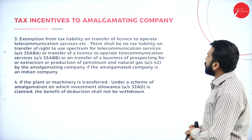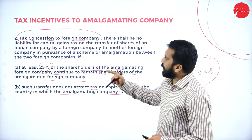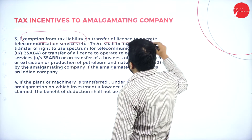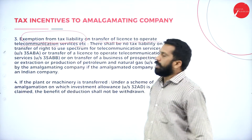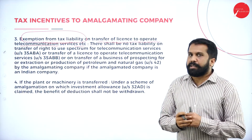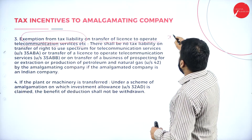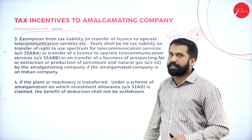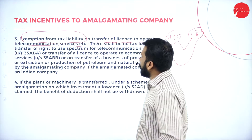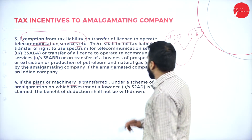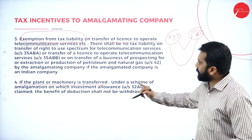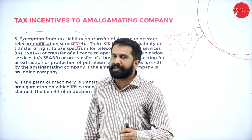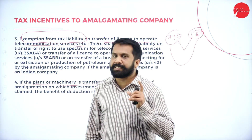Third tax incentive to the amalgamating company: exemption from tax liability on transfer of a license to operate telecommunications services. For example, if XYZ Telecommunication and PQR Telecommunication are merged, whatever license is transferred will be exempted. Additionally, if plant and machinery is transferred, that also comes under exemption under your tax scheme. These are the exemptions for transfer of assets, machinery, and licenses.